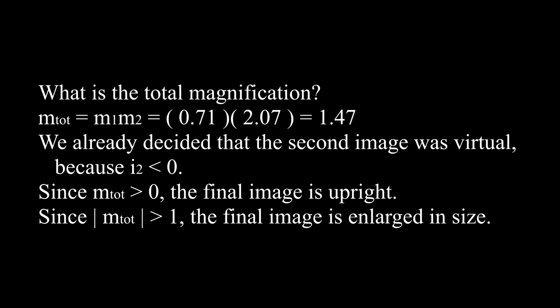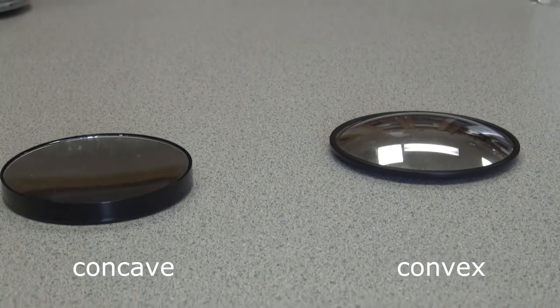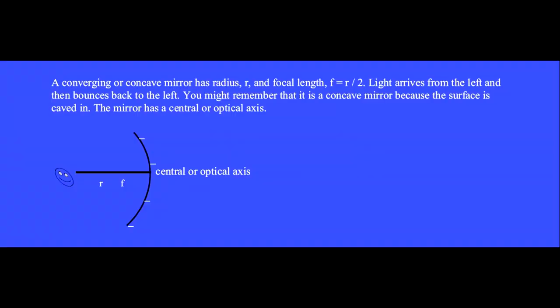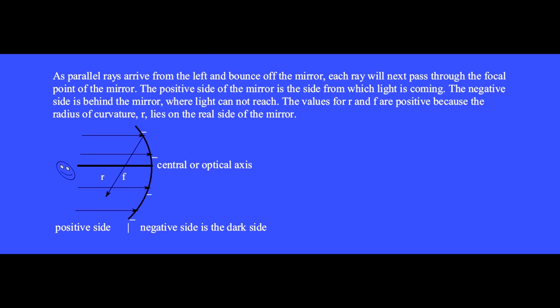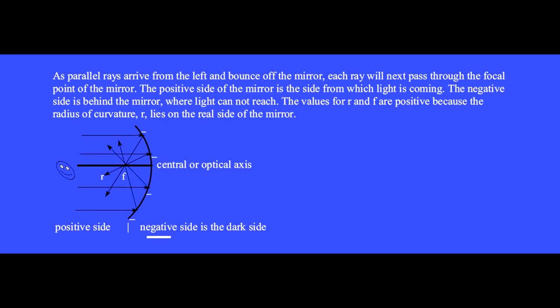Most any camera has about a dozen lenses. These are concave and convex shaped mirrors. A spherically shaped mirror has a radius of curvature R and its focal point is at half the radius. This person is looking toward the left at this converging or concave mirror — you might remember that it's concave because the surface seems caved inward. The mirror has a central or optical axis. As parallel rays arrive from the left and bounce off the mirror, each ray will next pass through the focal point of the mirror. The positive side of the mirror is the side from which light is coming; the negative side is behind the mirror where light cannot reach. The values for R and F are positive because the radius of curvature R lies on the positive side of the mirror.